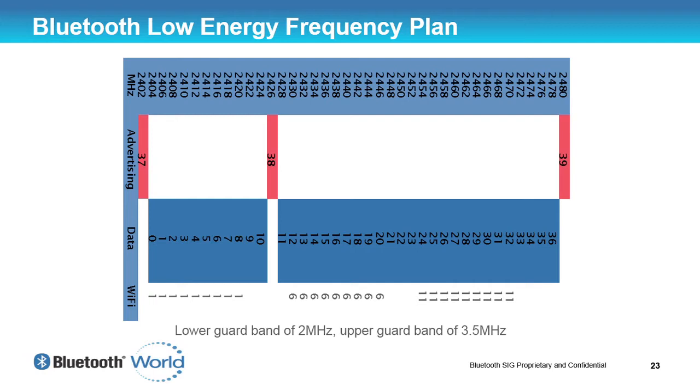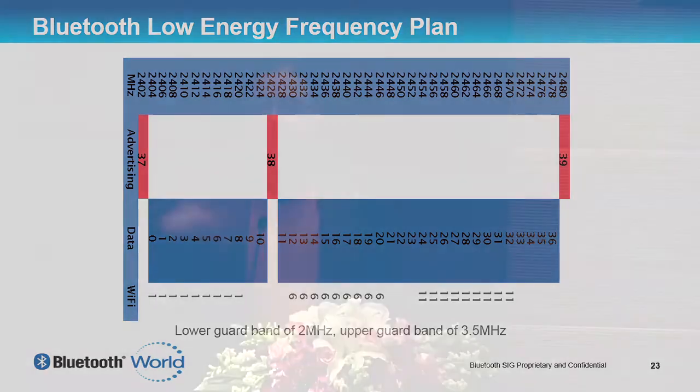At the bottom you can see a row called Wi-Fi, showing where Wi-Fi channels 1, 6, and 11 sit. So these advertising channels don't interfere with Wi-Fi, and Wi-Fi doesn't interfere with the advertising channels. You can have a whole infrastructure of Wi-Fi on a corporate campus and have Bluetooth advertising devices on every single person, every single chair, every single meeting room, and every single pen.